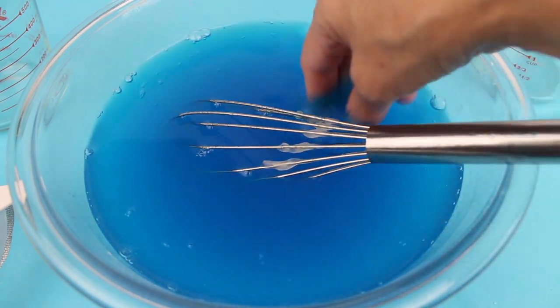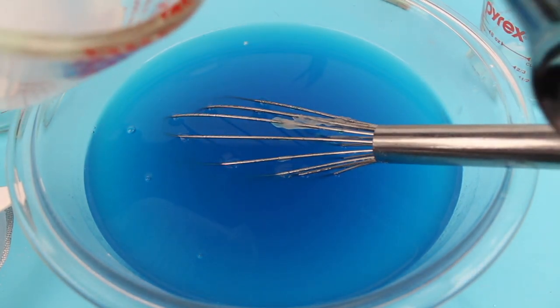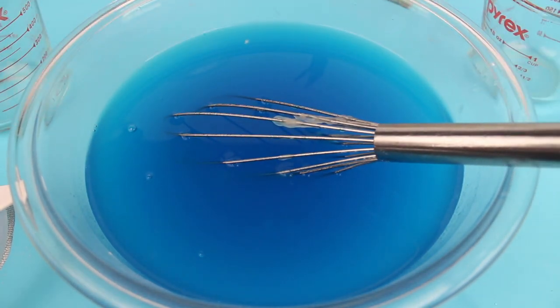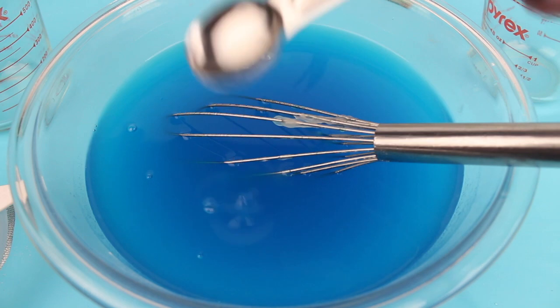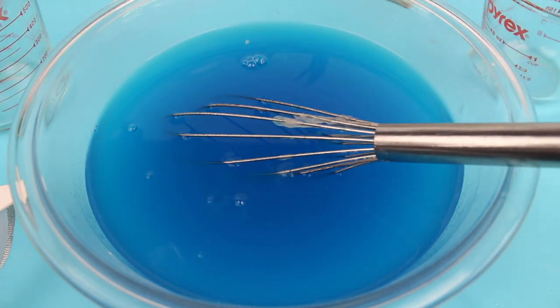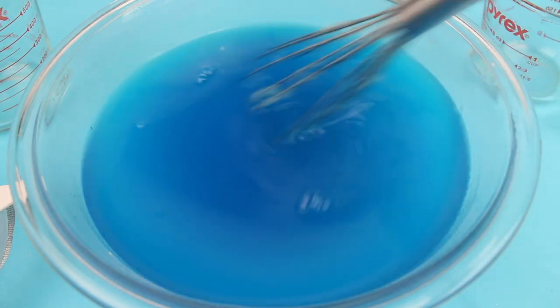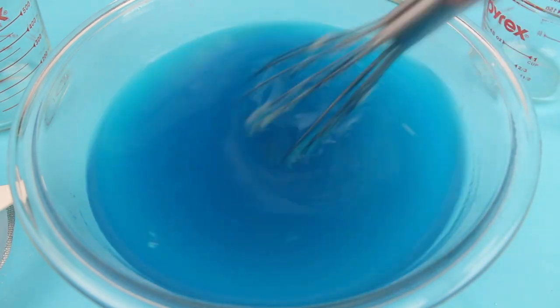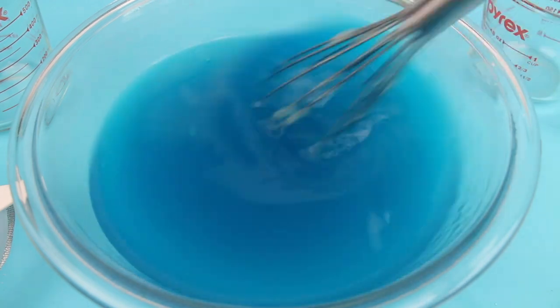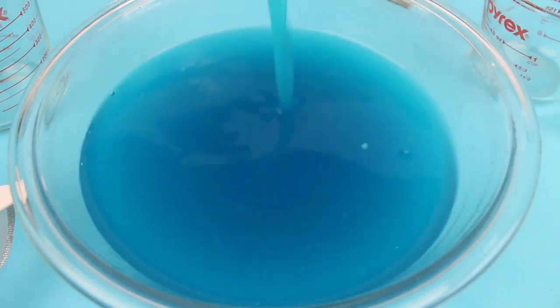Careful not to get it on your hands. Now add 6 to 7 teaspoons of borax mixture to the slime. It's already starting to thicken.